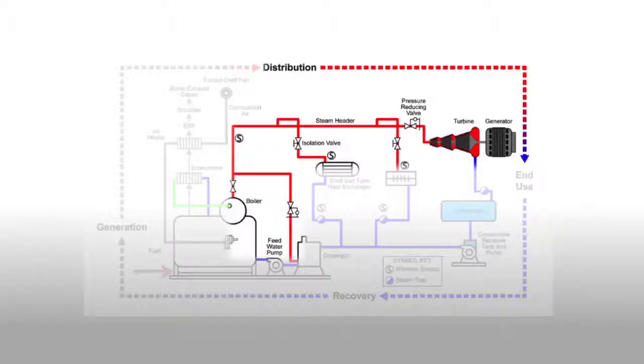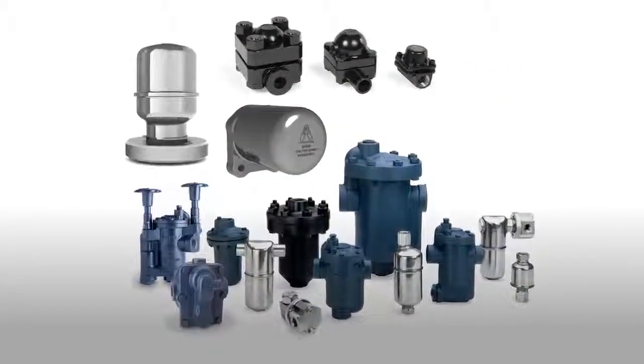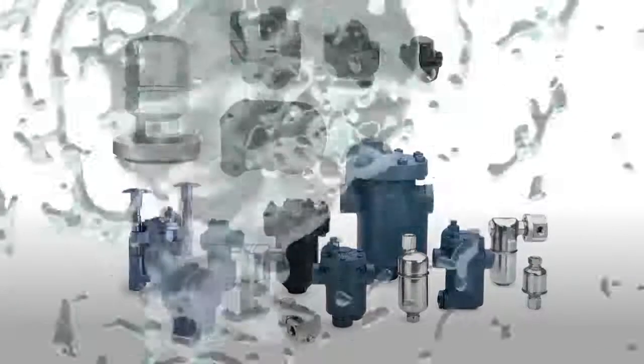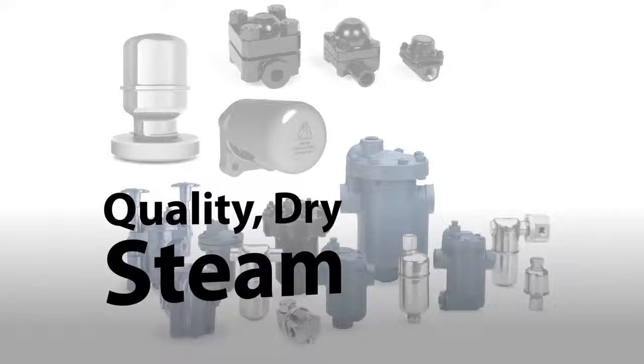For example, in steam distribution piping, Armstrong's SH series superheat and inverted bucket steam traps effectively remove condensate, ensuring the delivery of quality dry steam.